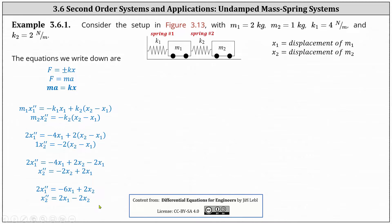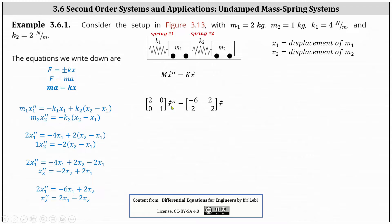Now we write the system in the form M times x double prime equals K times x, where M is the two-by-two matrix with entries two and one along the main diagonal — the coefficients of x one double prime and x two double prime. Matrix K contains the coefficients of x one and x two, giving the two-by-two matrix with entries negative six, two, two, and negative two, times vector x.